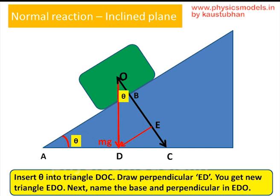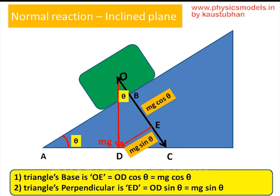Drop a perpendicular called ED so that the angle at E is 90 degrees. All we have to do now is name the hypotenuse in triangle EDO, and that hypotenuse is mg. The base of this triangle is OE, which is equal to mg cos theta because mg is the hypotenuse. The perpendicular ED is equal to mg sin theta. We have now found the components of the weight acting perpendicular to the plane and along the direction of the plane.